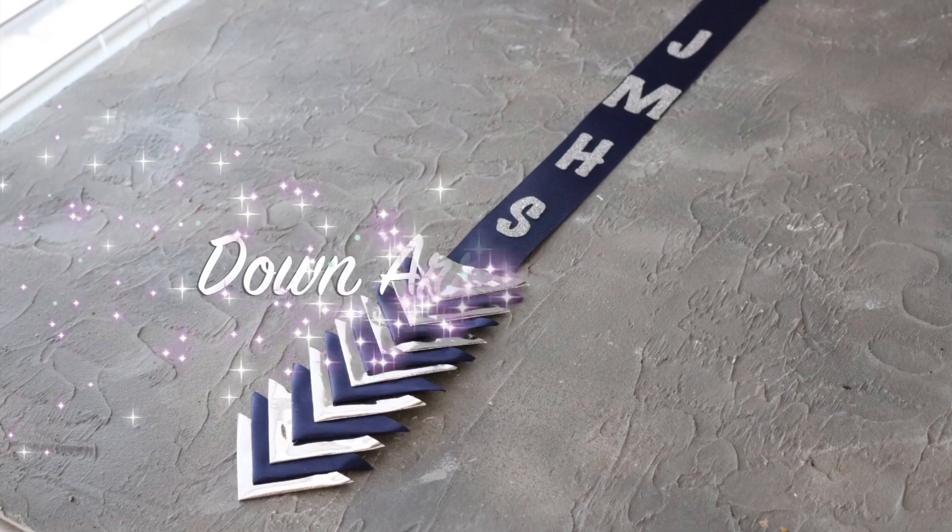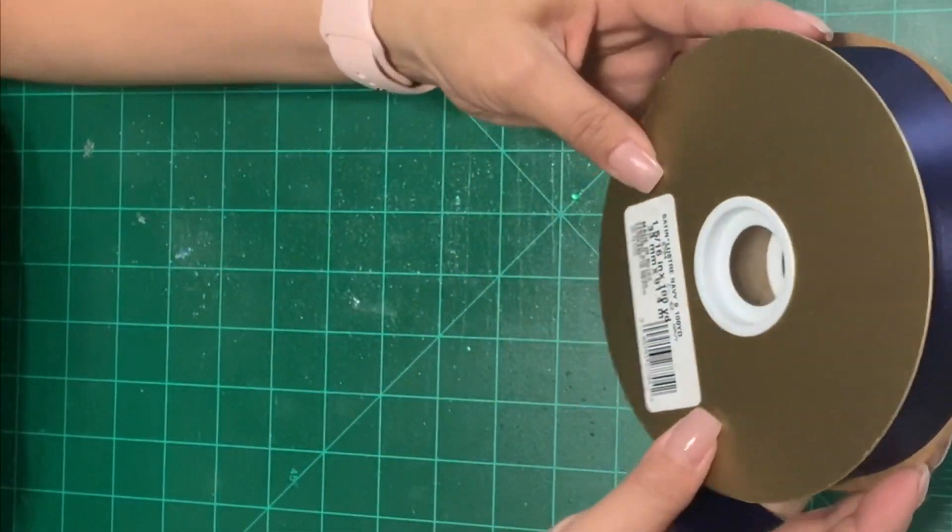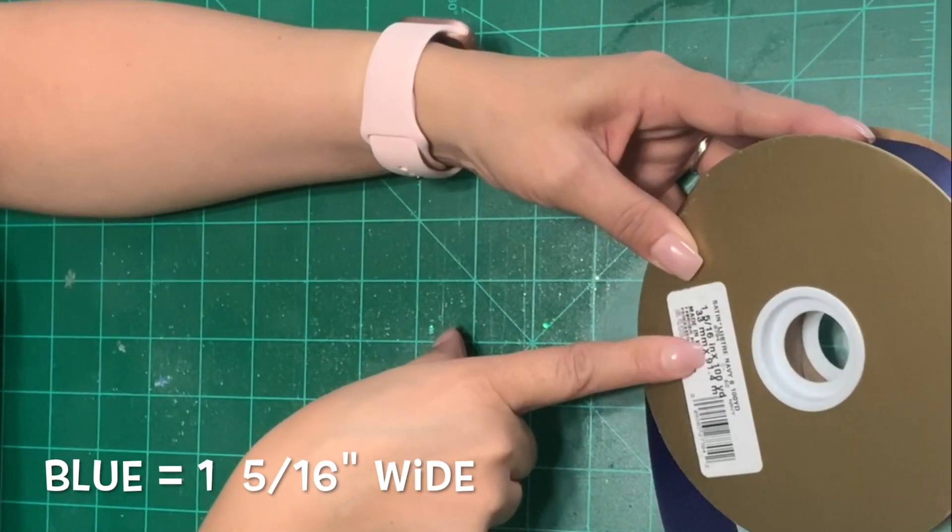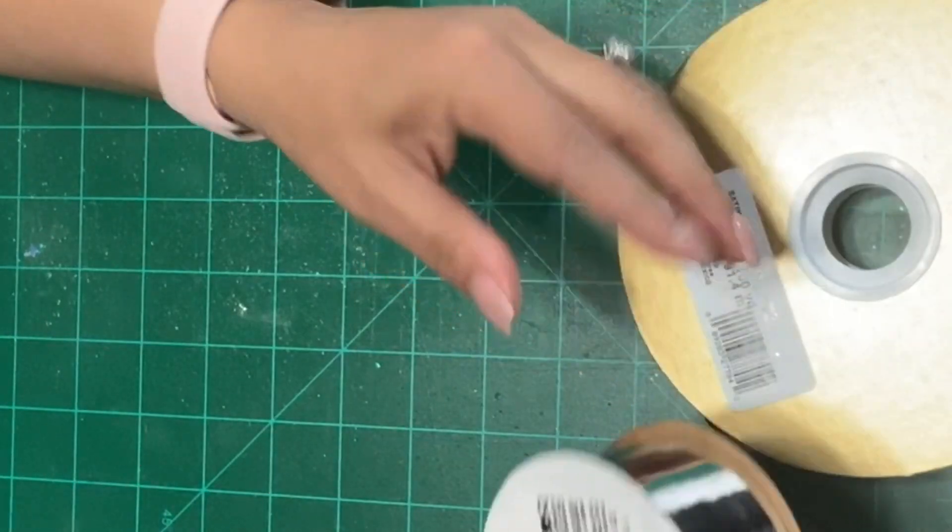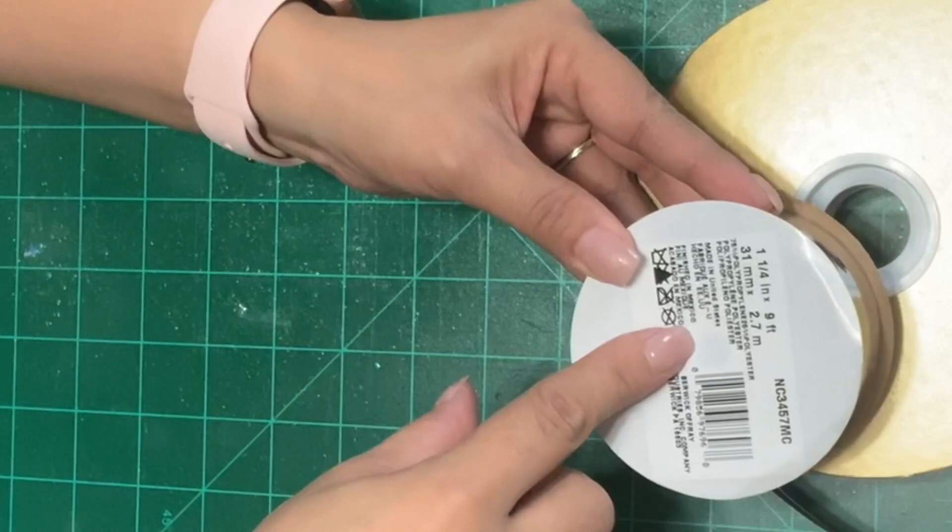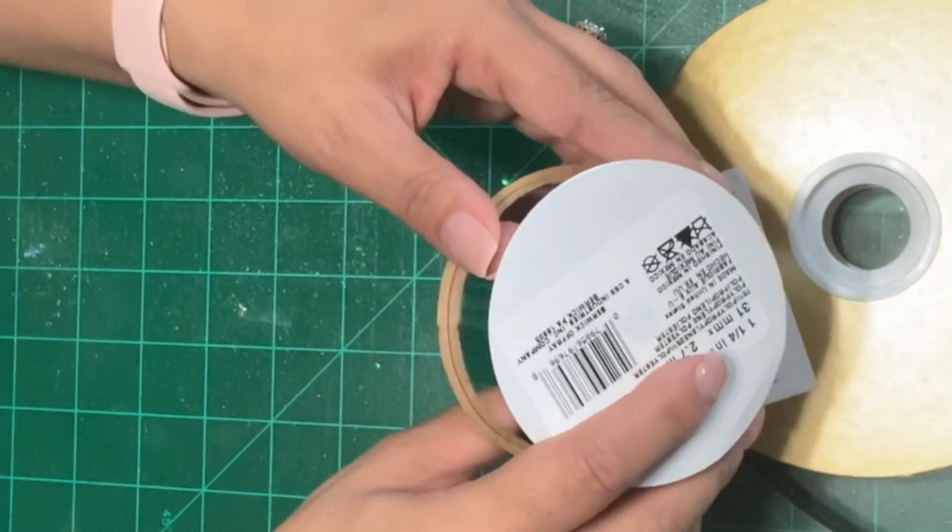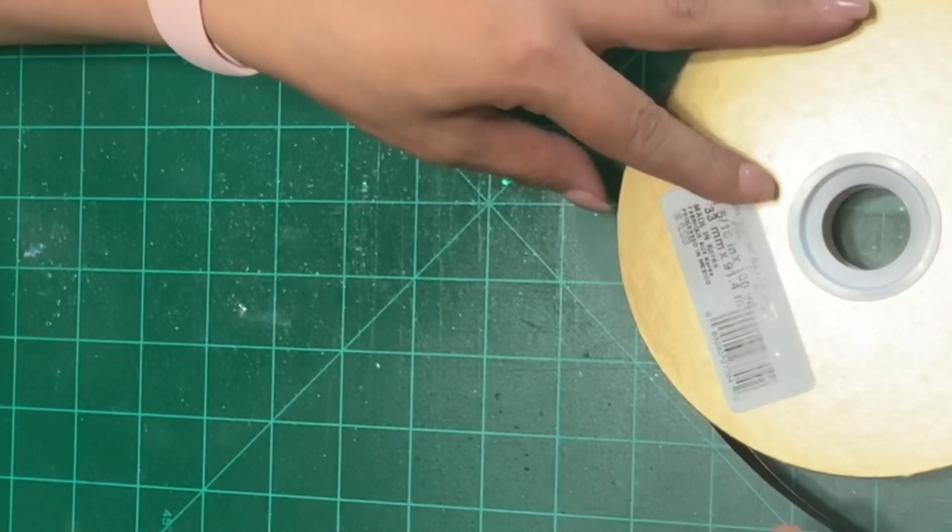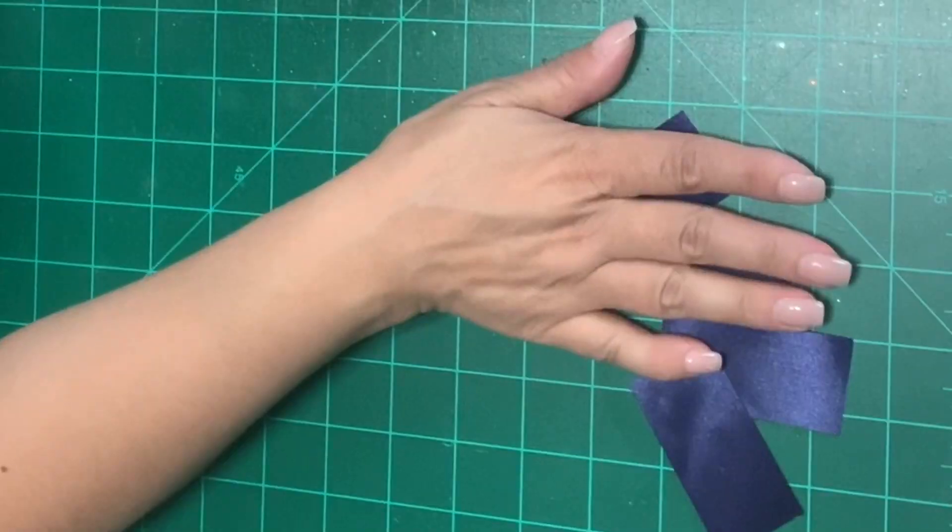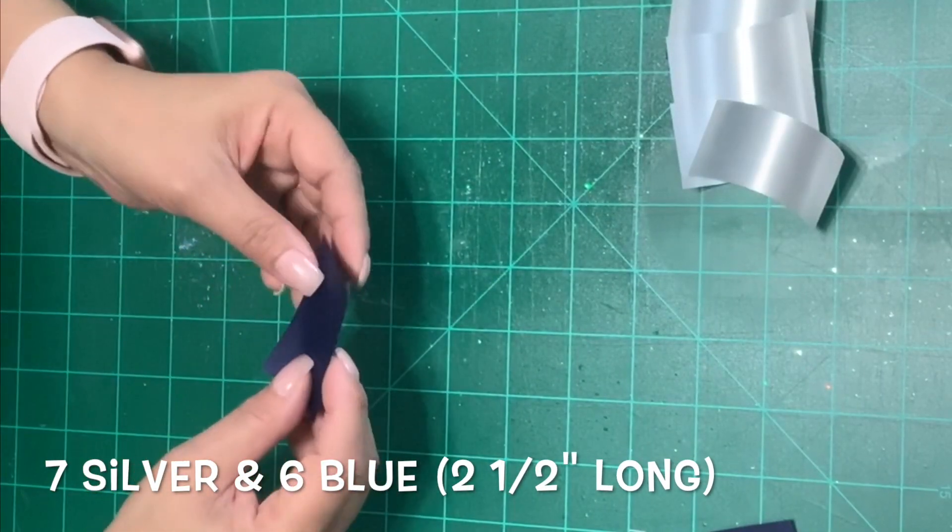The next chain will be a down arrow chain. I'll be using two different colors blue and silver. My blue is one and five sixteenths of an inch wide. My silver is one and one fourth inches. Now this one is just a little tiny bit bigger than the blue. I would normally use the same size for both but it's not going to make much of a difference. If you prefer you can also use just one color. You'll start by cutting strips two and a half inches long. You'll need seven silver and six blue.